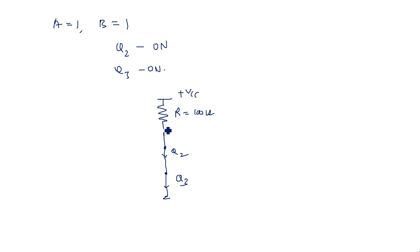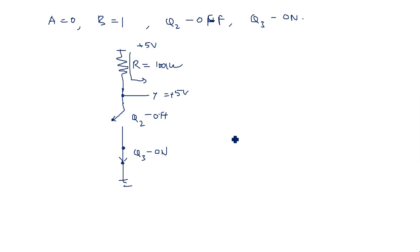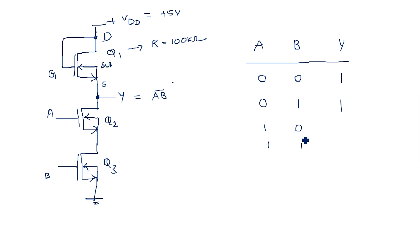When both Q2 and Q3 are ON, the output is directly connected to ground, so output equals 0 volts. Taking plus 5 volts as logic 1, the output is 0. This operation is nothing but the NAND operation.